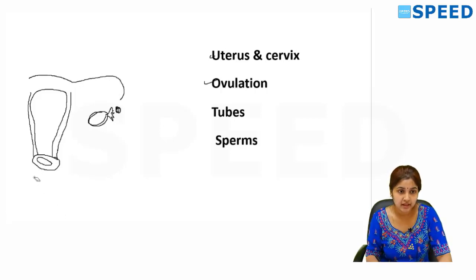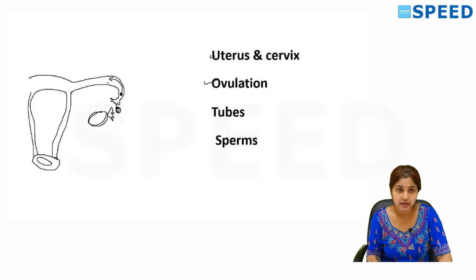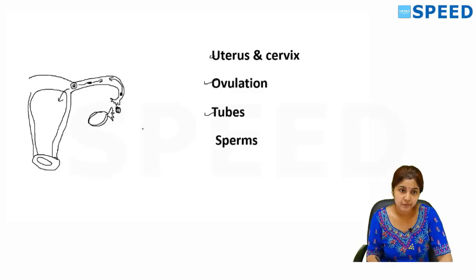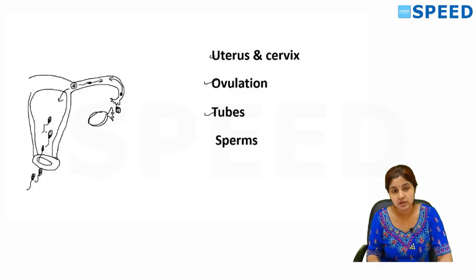The sperm and the egg meet in the tube. So the tubes need to be patent and functioning for this egg to travel and to meet the sperm, to form the zygote, and this conceptus will then travel into the uterus for implantation. Last, from the male side, functioning and normal sperms are the important gametes, and proper functional and structural sperms are an important part.